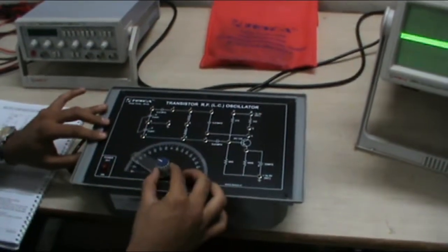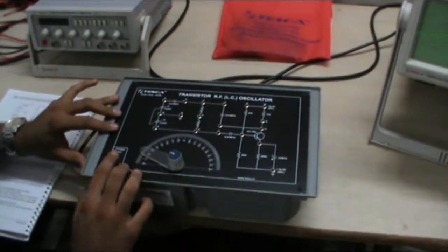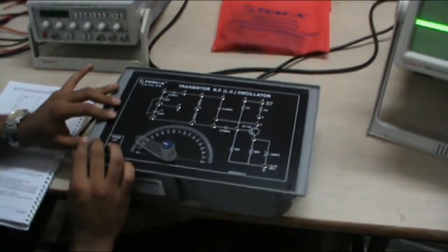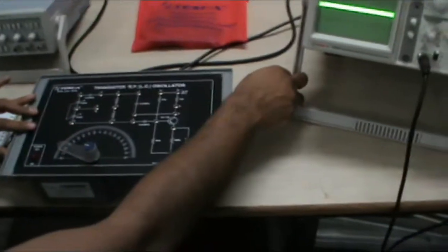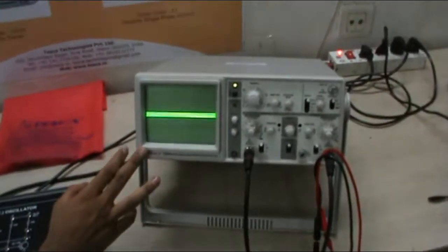This is the frequency adjustment meter. This is the main power on-off switch. For this, we also need a CRO in order to see the waveform generated by the oscillator.